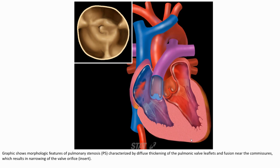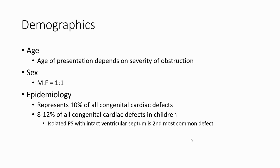The morphologic feature of pulmonary stenosis is created by the fused thickening of the pulmonary valve. The fusion occurs near the commissure, which results in narrowing of the valve. Pulmonary valve stenosis accounts for approximately 10% of all congenital cardiac defects.